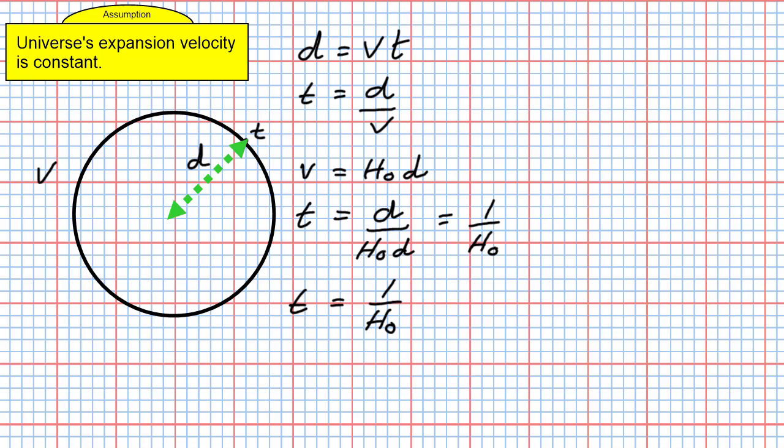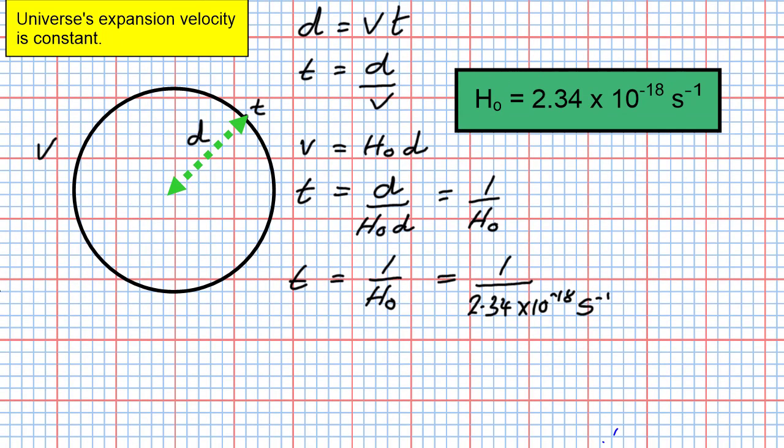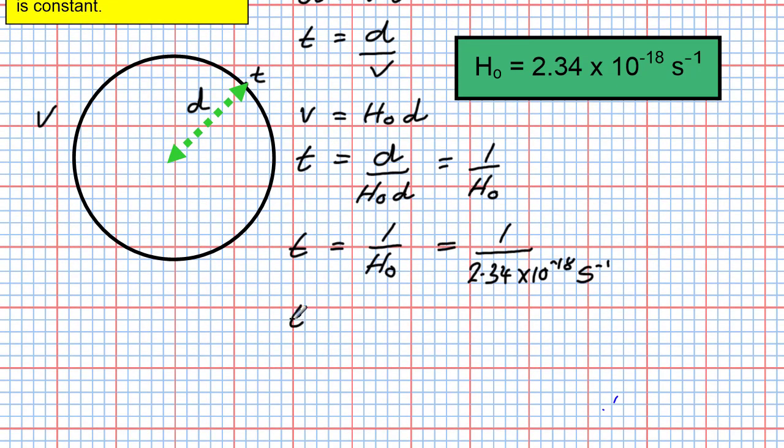That's why it's so important to have a very accurate value for the Hubble constant. Now the value we are taking is this one up here: H₀ is equal to 2.34 times 10 to the minus 18 seconds to the minus 1. So if we put that into our equation, we should get the age of the universe. So t equals 1 divided by 2.34 times 10 to the minus 18 seconds to the minus 1. Now we do that on our calculator, we end up with a time of the universe equal to 4.27 times 10 to the 17 seconds.